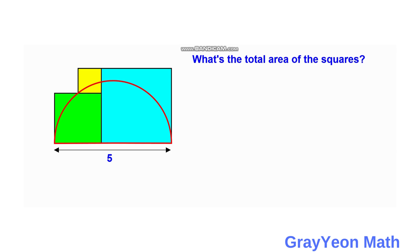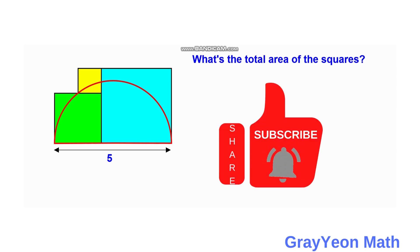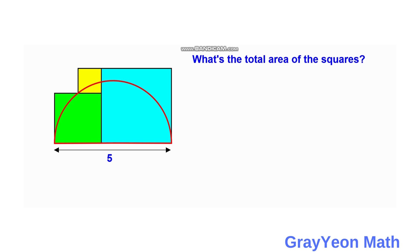Welcome to Grayon Mat. We are asked to solve this problem: we have three squares, and inscribed in these three squares is a semicircle. The diameter of the semicircle is five. What is the total area of the squares? Before we go to the solution, please like this video and don't forget to subscribe to the channel.